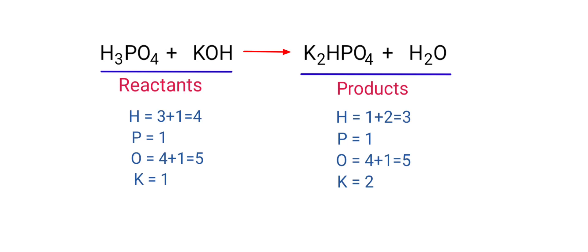On the products side, there are 3 hydrogen atoms, 1 phosphorus atom, 5 oxygen atoms, and 2 potassium atoms present.